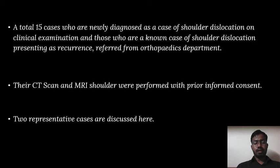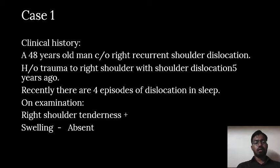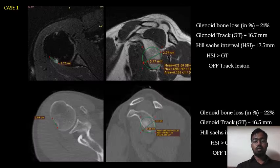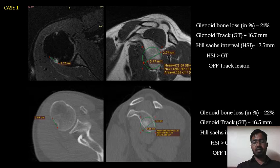A total of 15 cases were done and two representative cases are discussed here. In the first case, it was a 48-year-old man with complaints of right recurrent shoulder dislocation. He had a history of trauma to the right shoulder with recurrent dislocation 5 years ago, and recently there were 4 episodes of dislocation in sleep. On examination, the patient had right shoulder tenderness and there was no swelling. The glenoid bone loss, glenoid tract, and Hill-Sachs interval were calculated on both CT and MRI. The Hill-Sachs interval was 17.5 mm, which was greater than the glenoid tract of 16.7 mm on both CT and MRI, indicating that it was an off-track lesion.